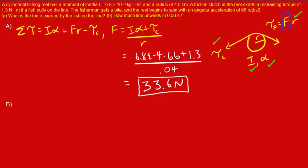Part B of the question asks how much line unwinds in half a second. Our strategy here is to write out all our variables and then look at them to identify an equation we can use. Our variables are the desired delta x and the given time t. We don't have A directly, but we know that we have alpha and R and we can solve for A.